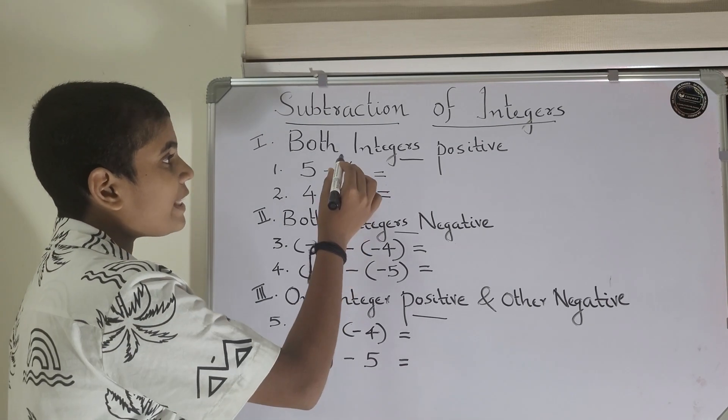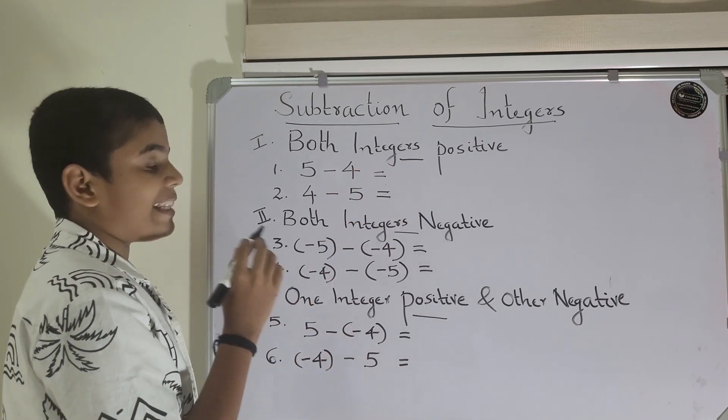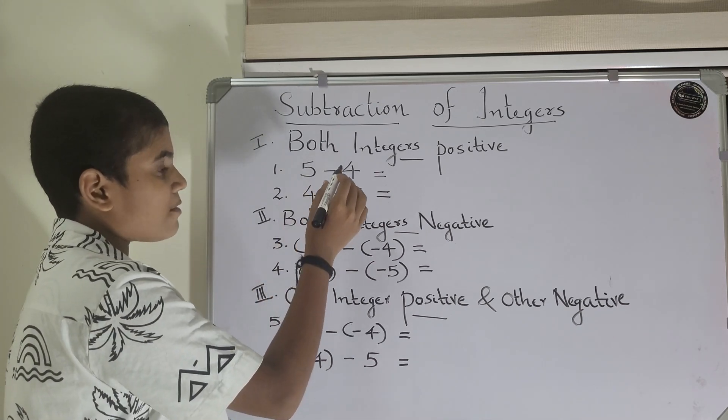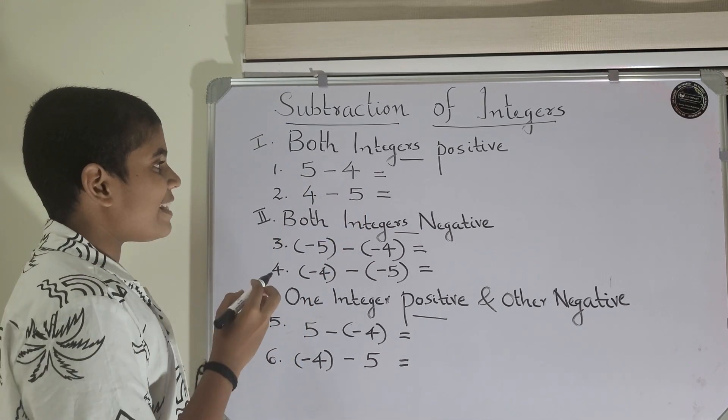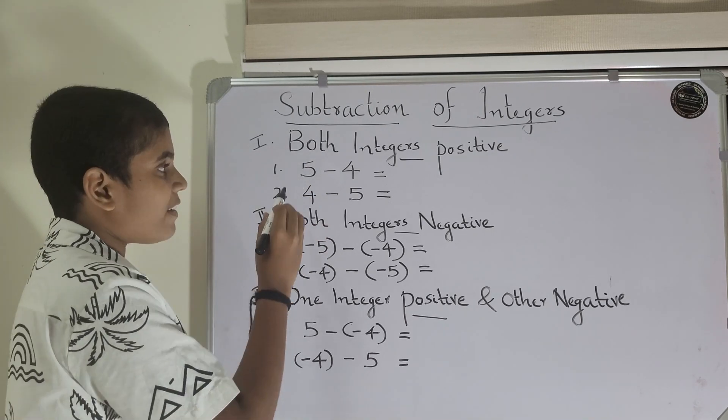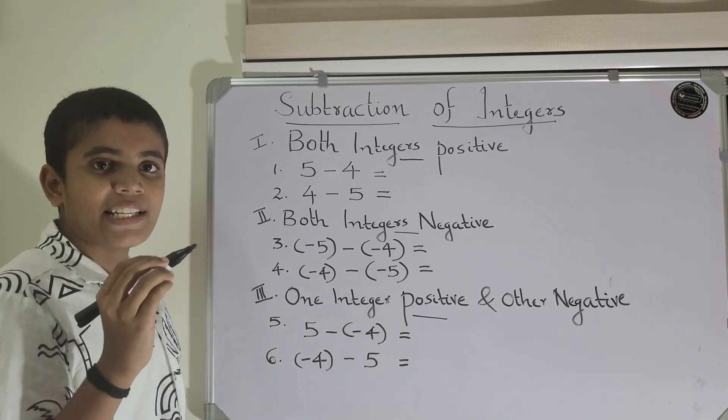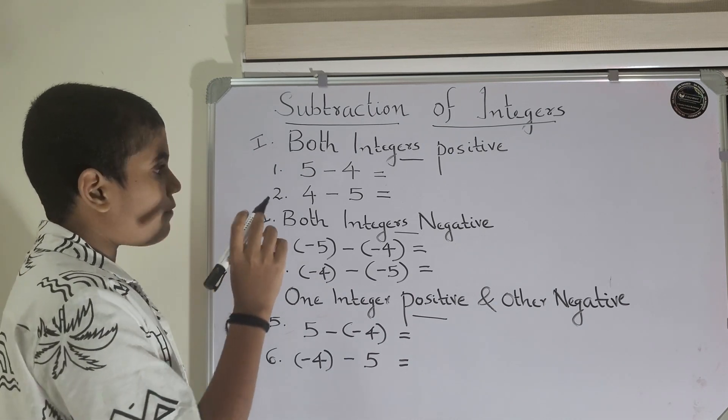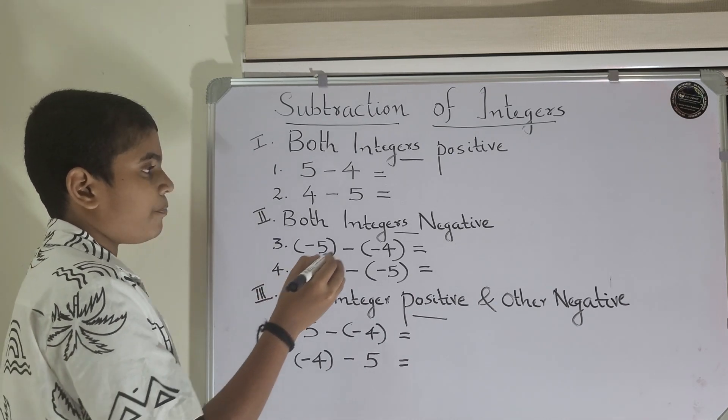First, both integers are positive: 5 minus 4. Here, you can see that both integers are positive and 5 is greater than 4. So, you can just normally subtract. 5 minus 4 equals 1.